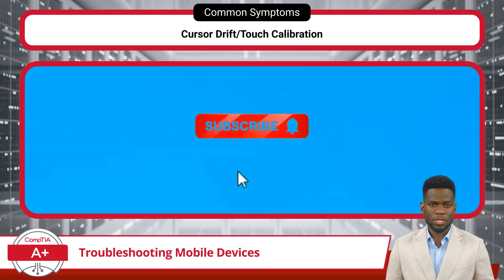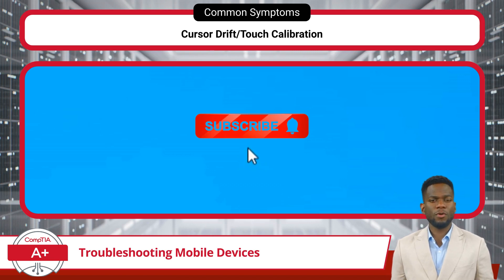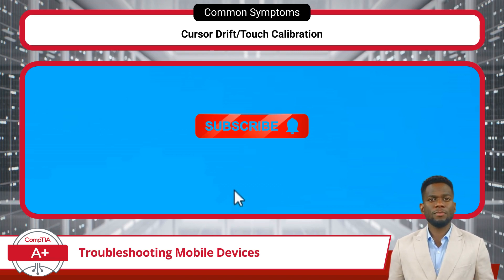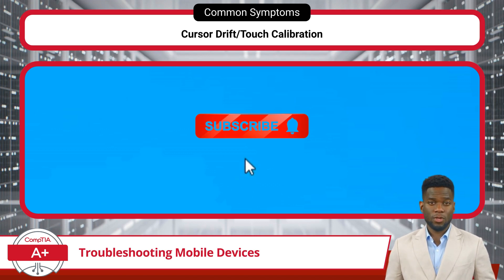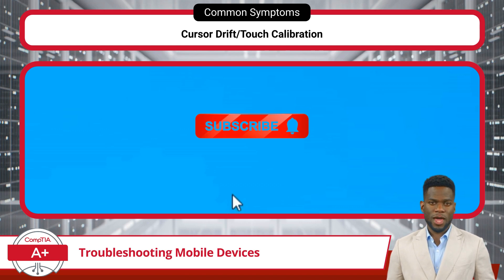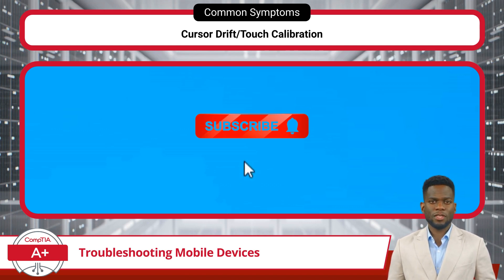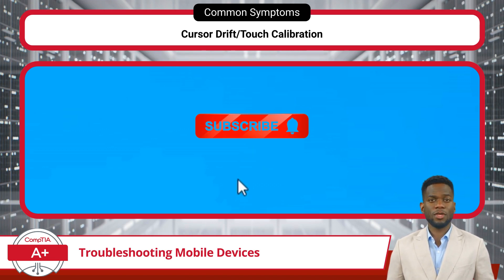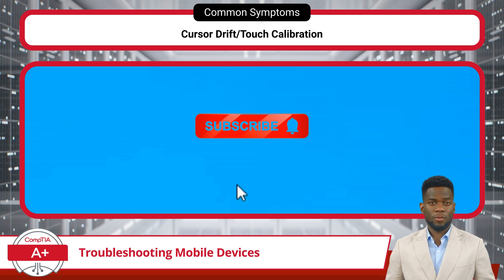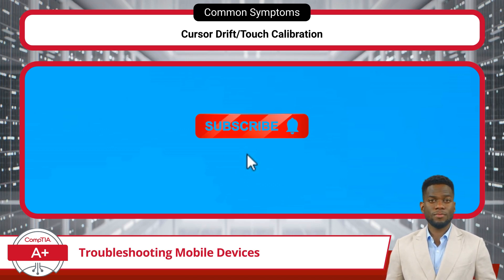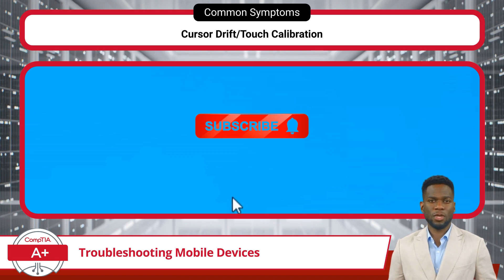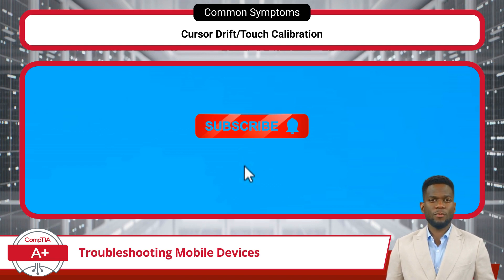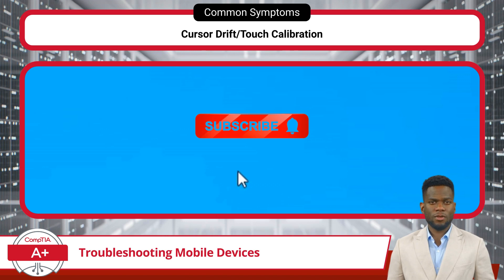Cursor drift and touch calibration issues commonly occur when the digitizer becomes misaligned or inaccurate. With cursor drift, the cursor on the screen continuously drifts or moves erratically, making precise selection or navigation challenging. Similarly, touch inputs may fail to register accurately or consistently, making it difficult to select the intended target. To address these issues, recalibrating the touchscreen digitizer is recommended. By initiating the calibration process, you can rectify misalignment issues and restore the responsiveness and accuracy of the touchscreen.